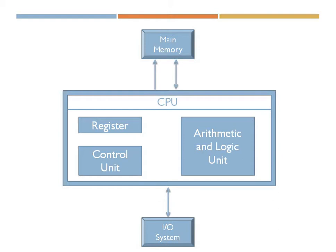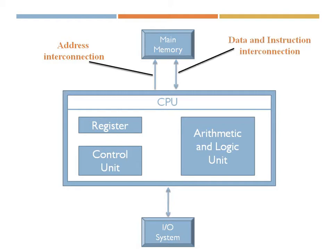The very first interconnection is between the CPU and main memory. The CPU requests the addresses of various operands it wants to process through the main memory. The direction is from CPU to main memory, and this interconnection is called the address interconnection.